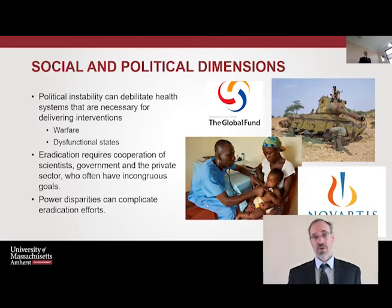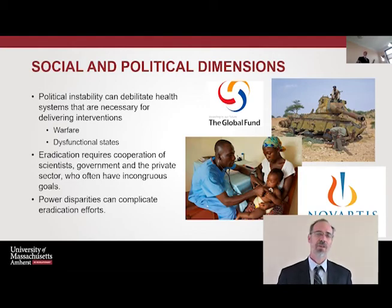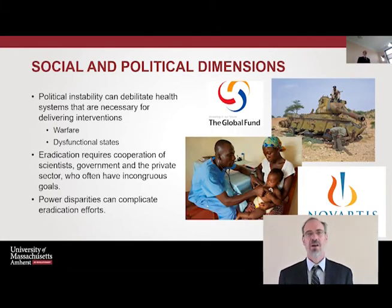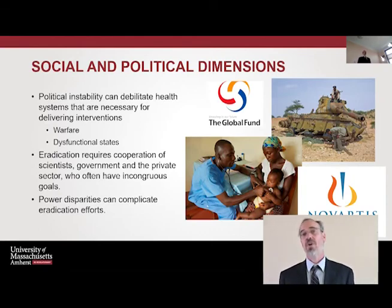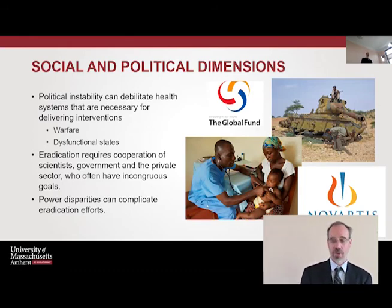Political dimensions: warfare is a major problem — delivering public health services during a war is very difficult. Dysfunctional states have rickety health systems, few ways of generating revenue, and must depend on international aid while lacking governmental leadership. In places like Kenya, Malawi, or Tanzania it gets complicated quickly. Eradication itself requires cooperation among governments, scientists, the private sector, and communities who often have incongruous goals. Getting all those parties to agree on something is difficult, and asking for something as huge as disease eradication is complicated — and power disparities themselves can complicate eradication efforts.